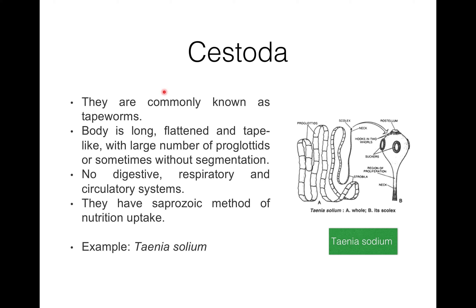Embryos have hooks. Taenia solium is the example shown here — you can see the body with segmentation, flat and ribbon-like. Focusing on the anterior part, you can see the rostellum with suckers and hooks arranged in two rows, and the region of proliferation just below the neck. Examples of Cestoda include Taenia solium, Echinococcus, and Hymenolepis.